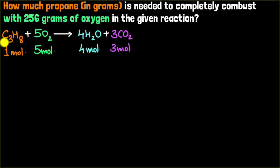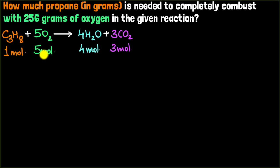This means that propane and oxygen will always be consumed, regardless of whatever quantity they have, but they will always be consumed in a one-to-five ratio.